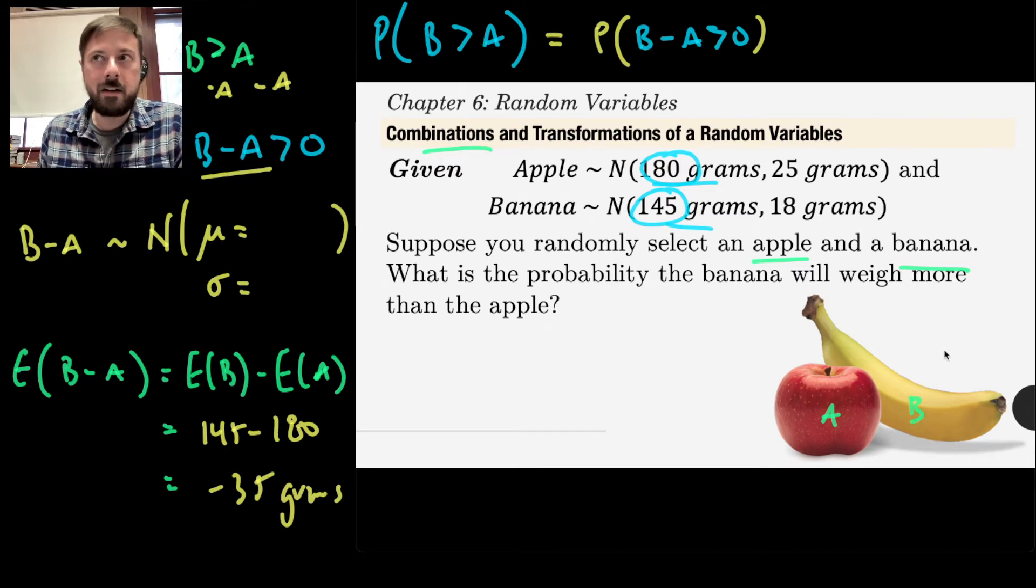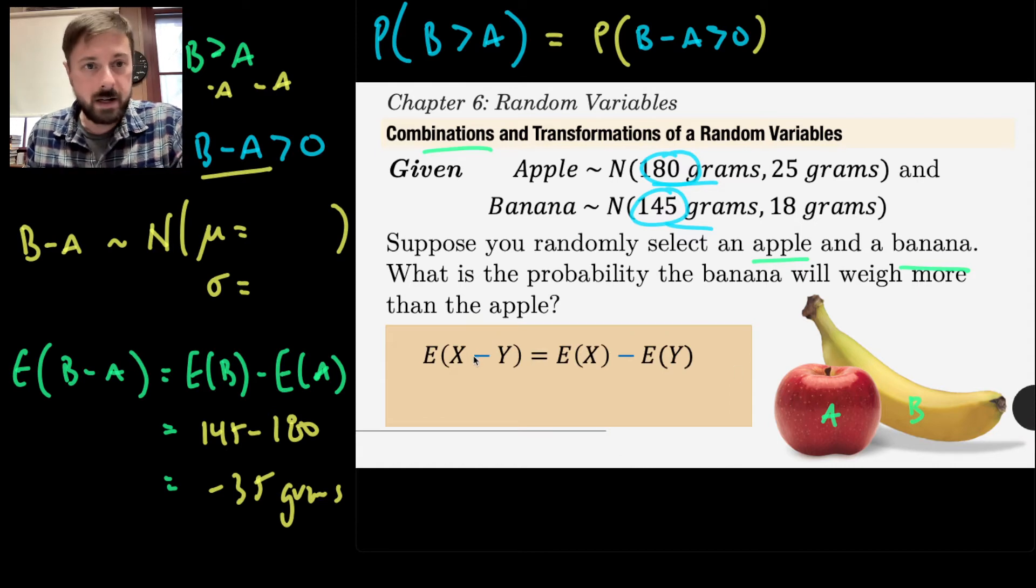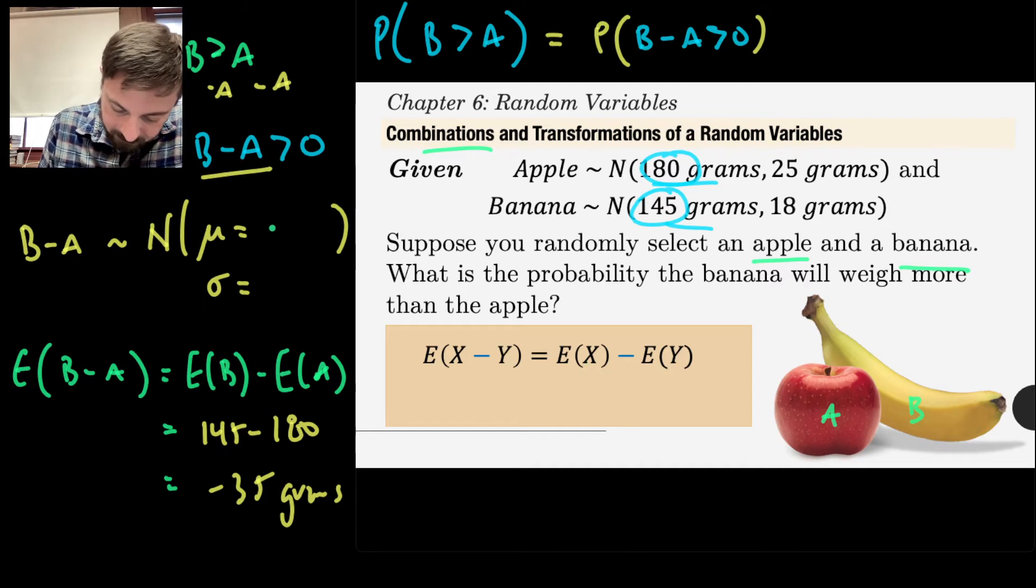Our intuition would probably say, well, I could just figure out what the expected value of banana is and subtract from that the expected value of apple. And that should tell me the answer. And so as it works out, maybe 145 minus 180, which would seem to be negative 35 grams. And yeah, guess what? That's correct.